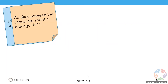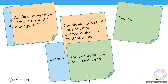We found that the candidate loves vanilla ice cream, and we also found that the candidate as a child discovers everyone else can read thoughts. Maybe these two events can be related — maybe that's how he finds out he can't read thoughts, somehow related to why he loves vanilla ice cream. Sometimes an event is just by itself, and that's okay — it's a developing process and we can always go back and fill in the details.